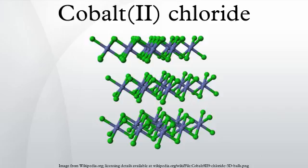Because of the ease of the hydration-dehydration reaction and the resulting color change, cobalt chloride is used as an indicator for water in desiccants.